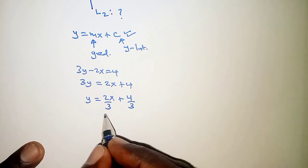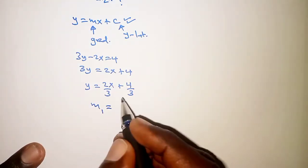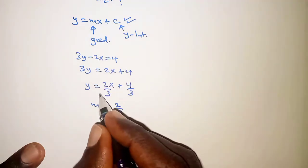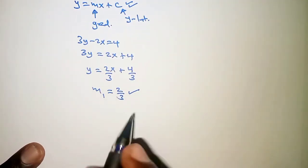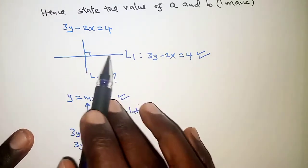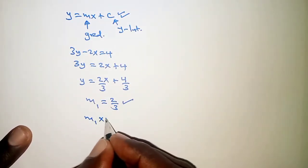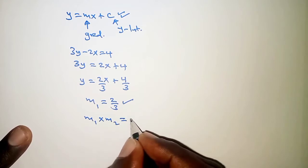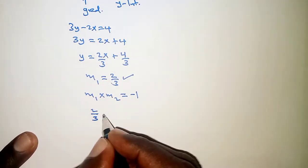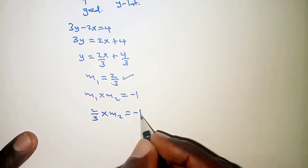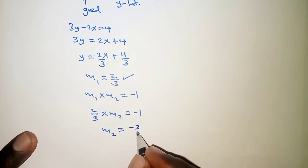We can see the equation is now in the form y equals mx plus c, which means the gradient of Line 1 is 2 over 3. Given that we have the gradient of Line 1, we know that for two perpendicular lines the product of their gradients equals negative 1. So 2 over 3 times the gradient of Line 2 equals negative 1, which gives the gradient of Line 2 as negative 3 over 2.